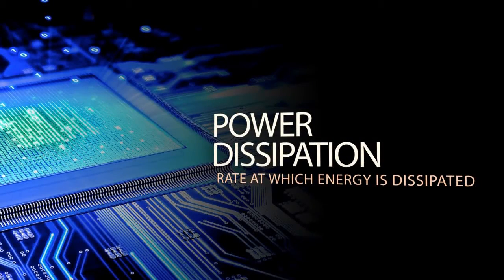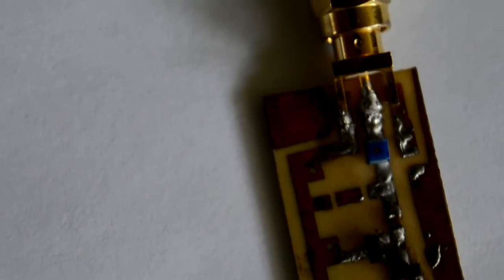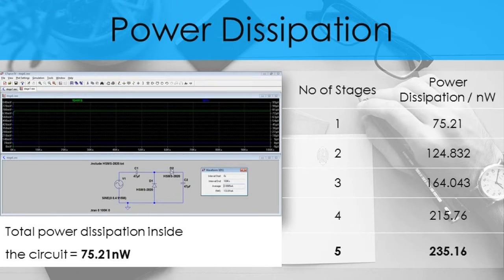The next stage, first we analyzed the power dissipation of the conditioned circuit. Power dissipation is a measure of the rate at which energy is dissipated or lost from an electrical system. When we analyzed them via LTSPICE software, the results were 75.21 nV power dissipation inside the circuit itself. It varied with the stages accordingly with a maximum of 235.16 nV.